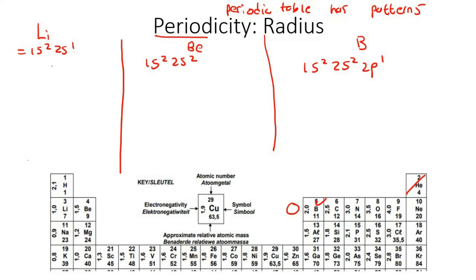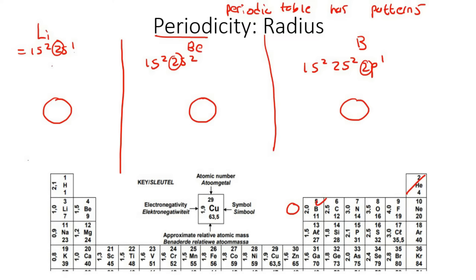So if you draw each of them, they would all have a nucleus. Let's draw three nuclei: lithium with three protons — plus three — beryllium with atomic number four so it has four protons, and boron with atomic number five so it has five protons.